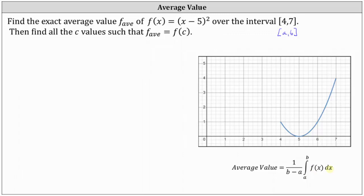Once we find the average value, we're asked to find all the c values such that the average value equals f(c). In our case, a equals four and b equals seven. Therefore the average value, indicated by f-sub-average, is equal to one divided by the quantity seven minus four, times the definite integral from four to seven of f(x), which is (x-5)², dx.